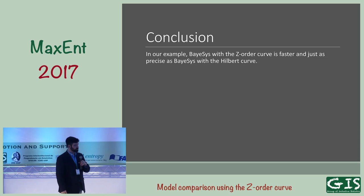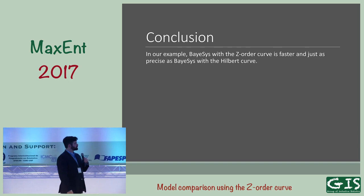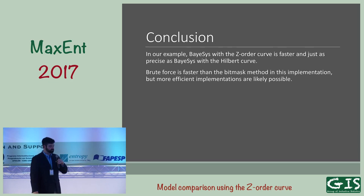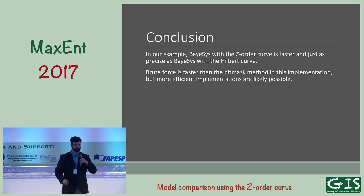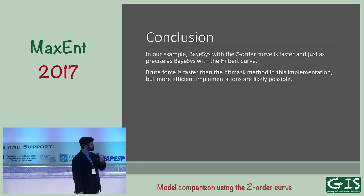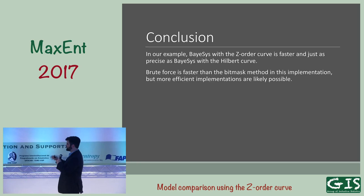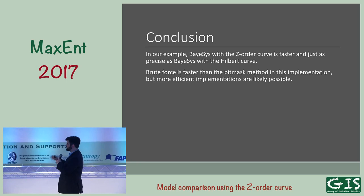In conclusion, in our example, BASIS with the Z order curve is faster and just as precise as BASIS with the Hilbert curve. The brute-force approach with explicit bit interleaving and de-interleaving is faster than the bit-mask method in this implementation, but in other implementations the mask-based approach is more efficient, and there are likely more efficient ways to implement it in BASIS. The upshot is it's something interesting to check out. Thank you very much.